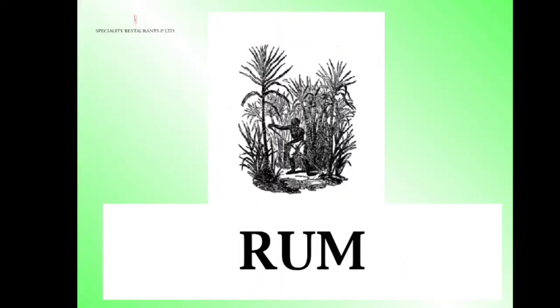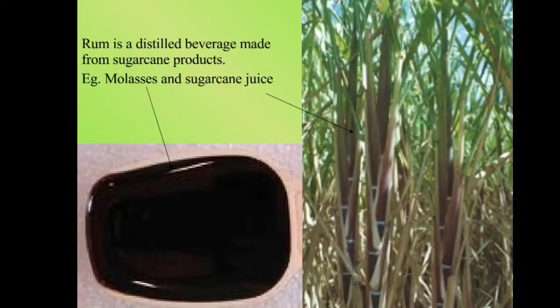Good morning students, today we are going to learn the topic rum, which is taken from unit 1 alcoholic beverages. The subject is F&B Operations and Management. Rum is a distilled beverage made from sugarcane products, for example molasses and sugarcane juice.